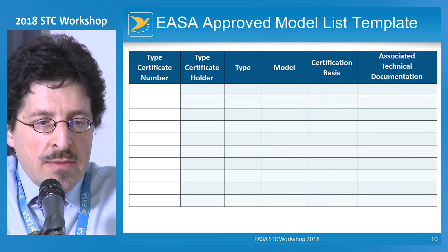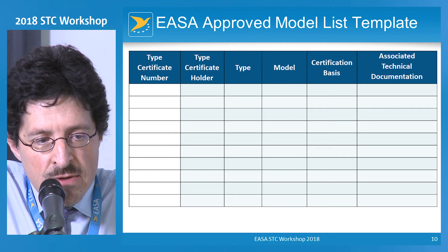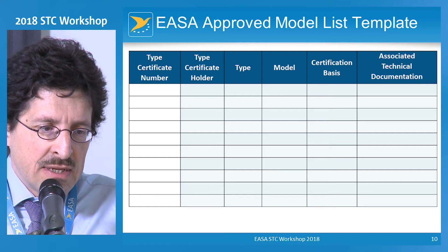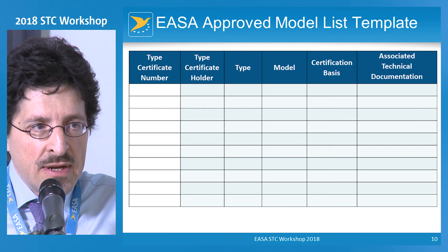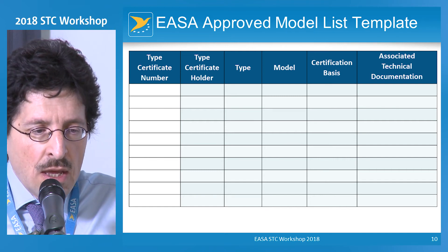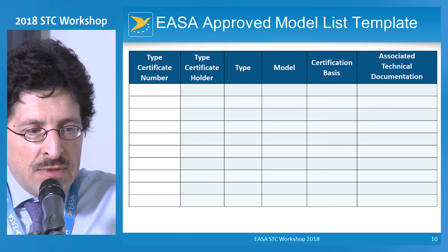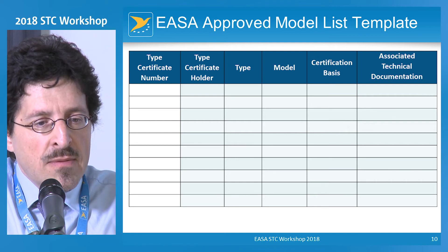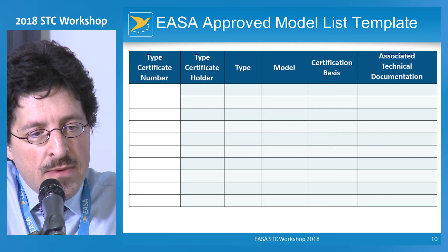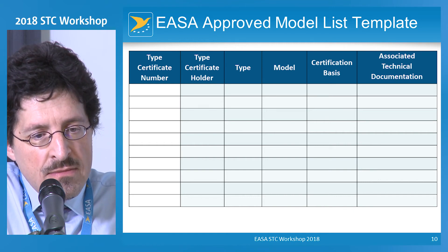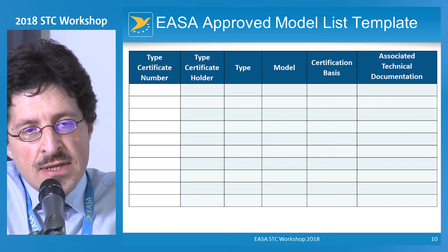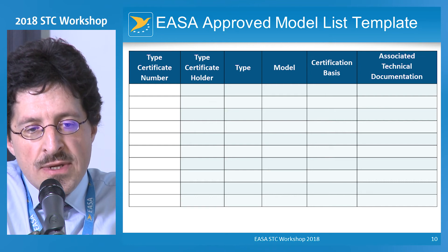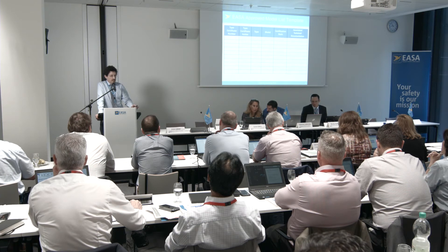As a final slide, I'm providing a template of what an approved model list table looks like. This is a significantly simplified version of the table provided last year, based on experience from different AML STCs approved during the previous year. You are expected to provide information regarding the type certificate number — normally a reference to the TCDS — the name of the type certificate holder, the types and models to which the AML approval is applicable, the certification basis for each model, and the associated technical documentation such as the master data list, flight manual supplement, ICA, etc.